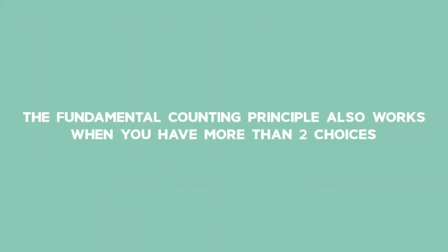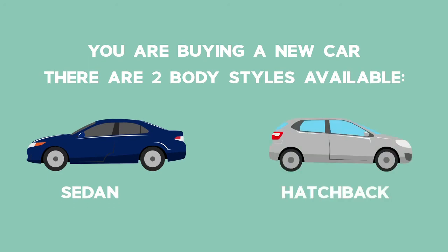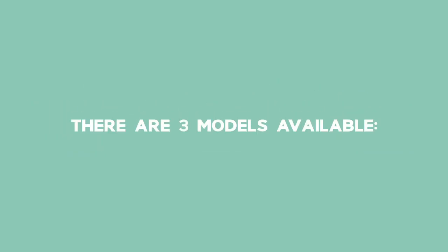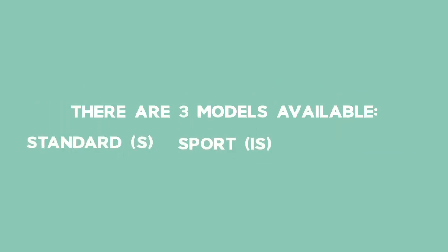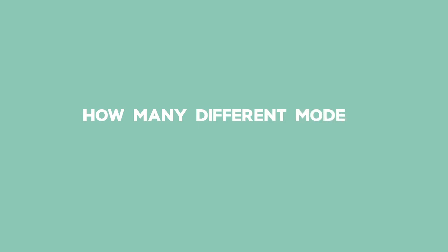The Fundamental Counting Principle also works when you have more than two choices. If you are buying a new car, there are two body styles: sedan or hatchback. There are five colours available: dark blue, grey, red, black and light blue. There are three models available: standard (S), sports (IS), and luxury (SL).